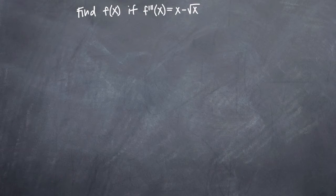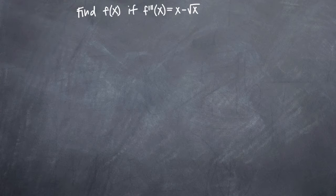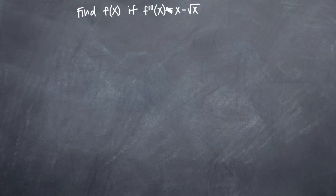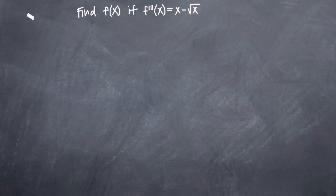In this particular problem, we've been asked to find f of x if f triple prime, or the third derivative of x, is equal to x minus the square root of x. In order to find our way from f triple prime, or the third derivative of x, back to f of x, we're going to have to work our way backwards.